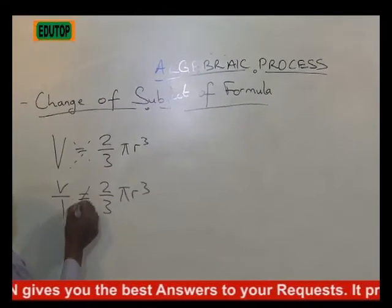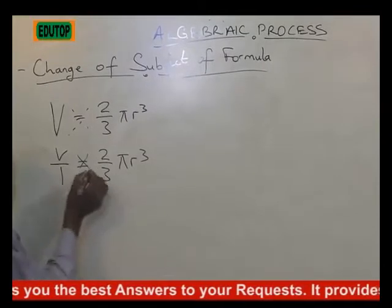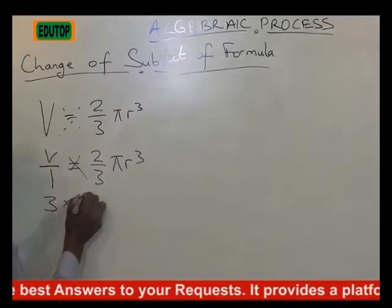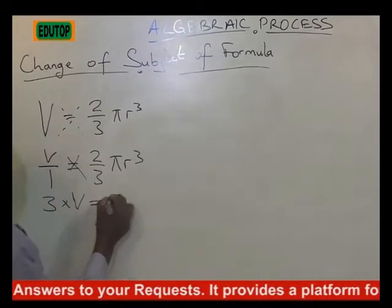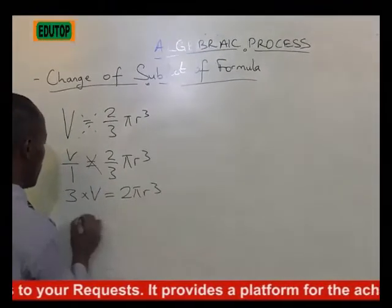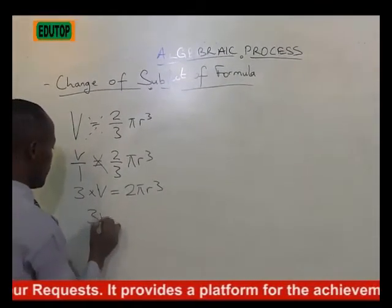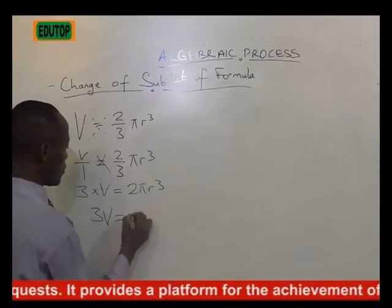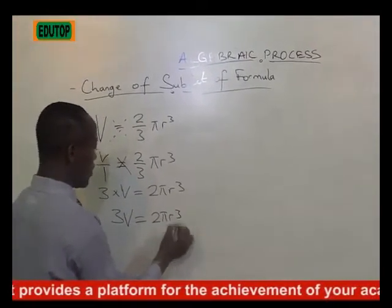If we cross-multiply, we are having 3 times V is equal to 2 pi R cubed. Now we are having 3V which is equal to 2 pi R cubed.